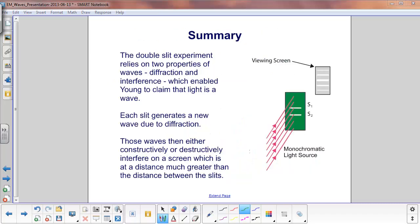To summarize, the double slit experiment relies on two properties of waves, diffraction and interference. These enabled Young to claim that light is a wave. You start here with a monochromatic light source. The light passes through the two slits here. And each one generates a new wave due to diffraction.